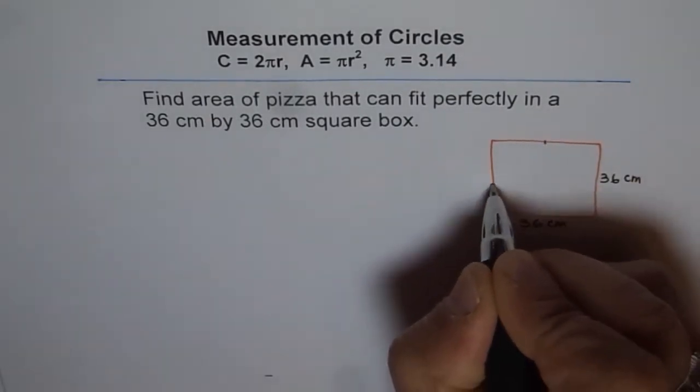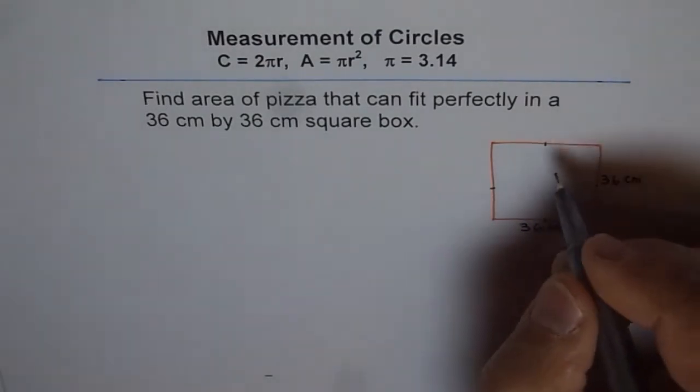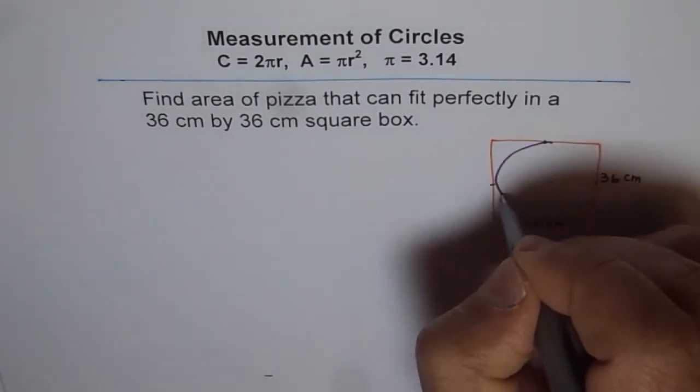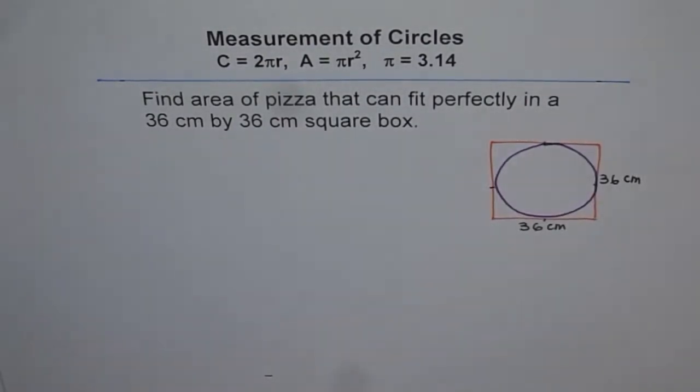All sides are equal. Now in this box we need to fit a circular pizza. So let me make a circular pizza inside this. So the question is kind of like this: find area of pizza that can fit perfectly in a 36 cm by 36 cm square box. So that is what we have.